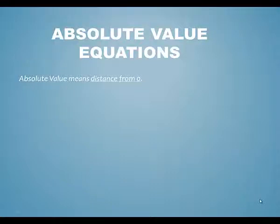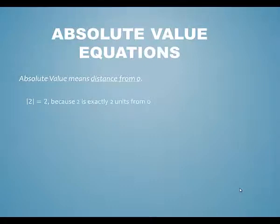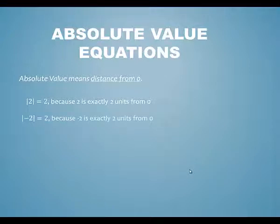In this video we're going to talk about absolute value equations. Whenever we solve equations involving absolute value, it's very important that we remember what absolute value means. Absolute value refers to the distance from zero. The absolute value of two is two, because two is exactly two units from zero. Likewise, the absolute value of negative two is two, for exactly the same reason — negative two is two units from zero.